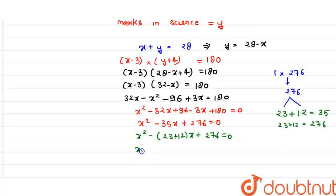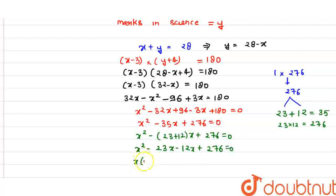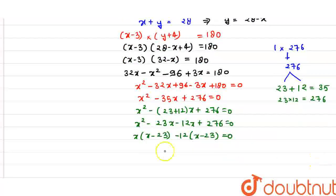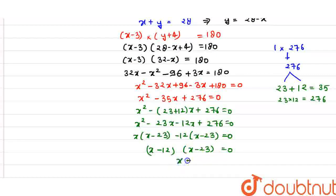So now it becomes x squared minus 23x minus 12x plus 276 equals 0. Taking x common from the first two terms gives x(x minus 23), and taking minus 12 common from the last two terms also gives (x minus 23). So the factors are (x minus 12)(x minus 23) equals 0, giving us two values: x equals 12 and x equals 23.